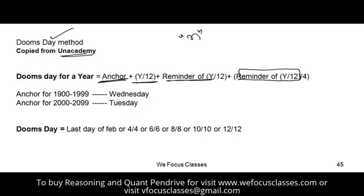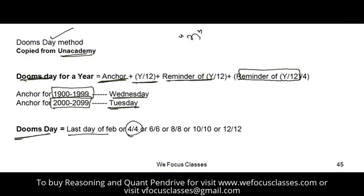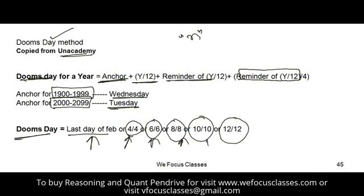The anchor day depends on the century: for years 1900–1999 the anchor day is Wednesday; for years 2000–2019 the anchor day is Tuesday. The doomsday concept states that every year, the last day of February, 4th April, 6th June, 8th August, 10th October, and 12th December all fall on the same day — the doomsday for that year.